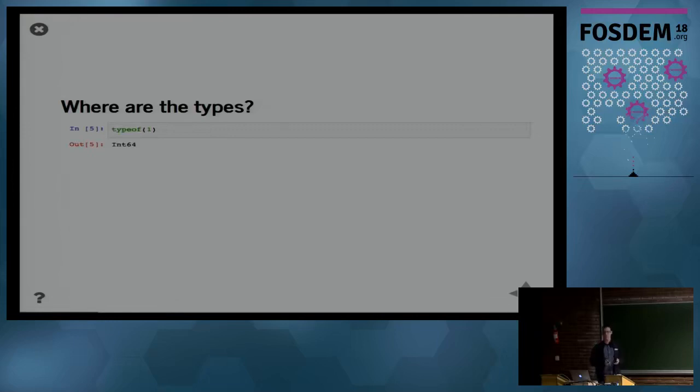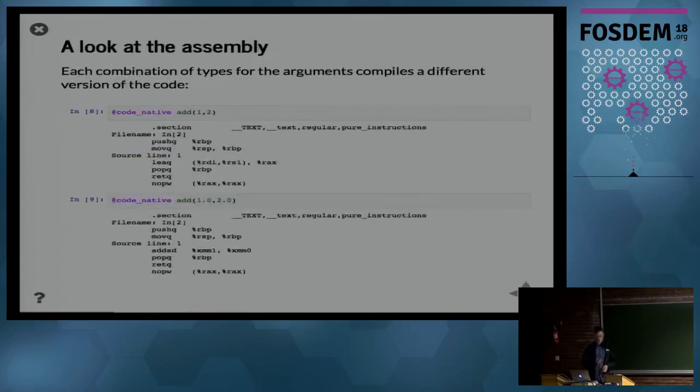I said it was a strongly typed language, so where are these types? You can request the type of everything that you create or every variable you create in Julia using the type of function. Here we see it's a 64-bit integer. If we apply our add function to two integers, we get an integer back. If we do the same for floating point numbers, we get a floating point value back. Why is that important? Julia will compile a new function for every possible combination of types that you supply it. We can directly look at the machine code using the code_native macro in Julia. We see the machine code for both functions is very similar except for this instruction here, which is integer addition here and floating point addition here. So it compiles a specialized function for every combination of types.